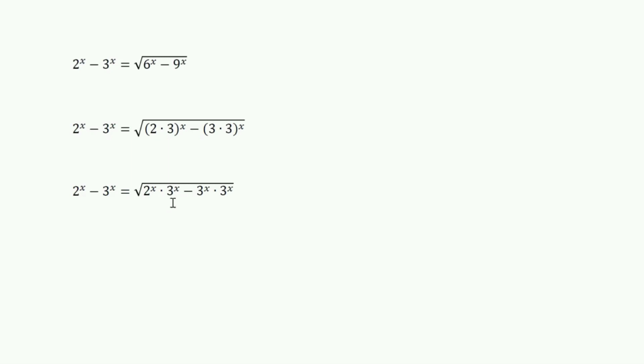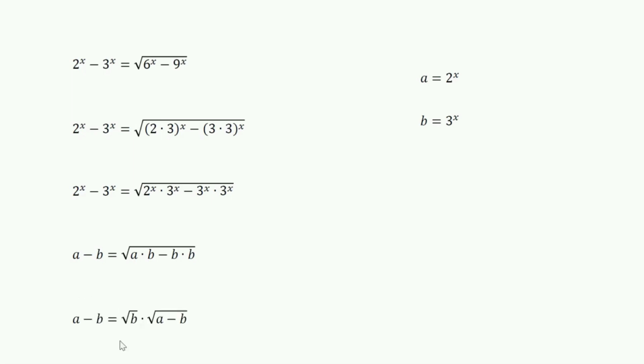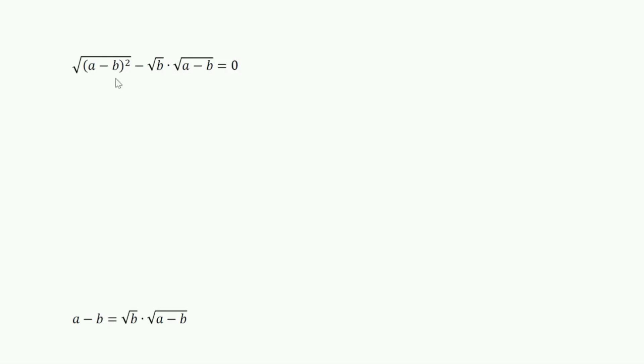Let's substitute a = 2 raised to x and b = 3 raised to x. Then the equation becomes a minus b equals square root of a × b. Here we can factorize with root b, so we can write: a minus b equals root b into square root of a minus b.